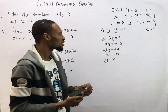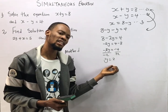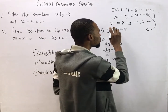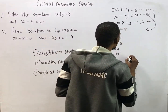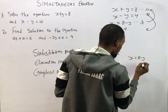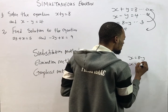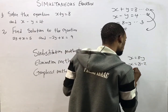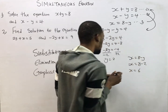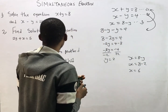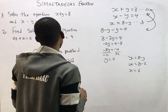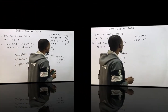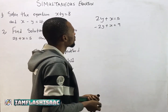Dividing both sides by minus 2, y equals 2. We've gotten our value for y. In simultaneous equations, as long as you've got a value for y you must also get a value for s. Putting y equals 2 into equation three — s equals 8 minus 2 — so s equals 6. Therefore y equals 2 and s equals 6.